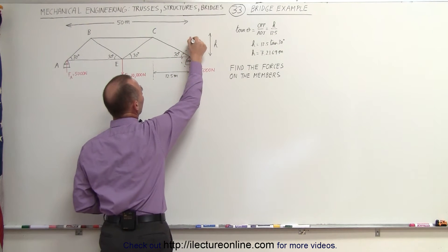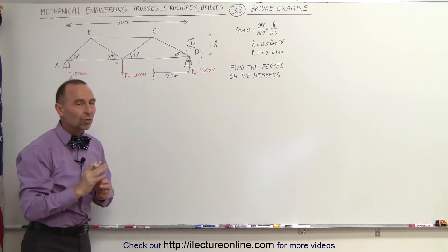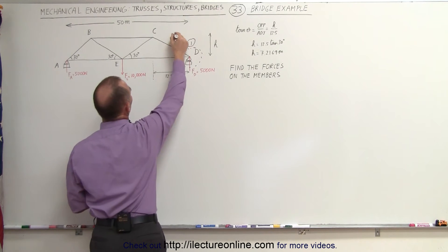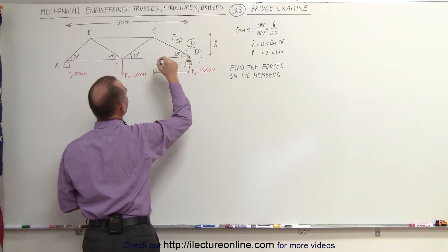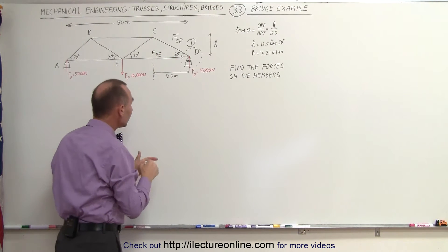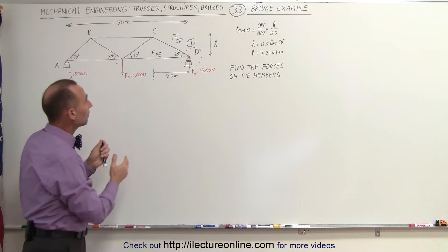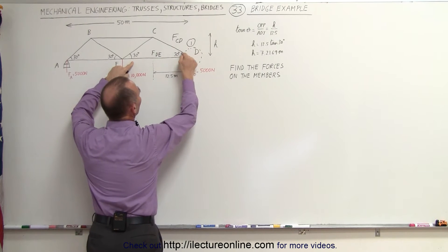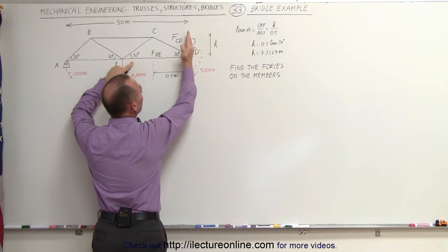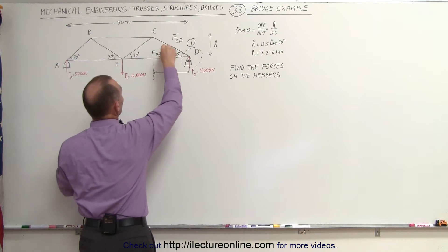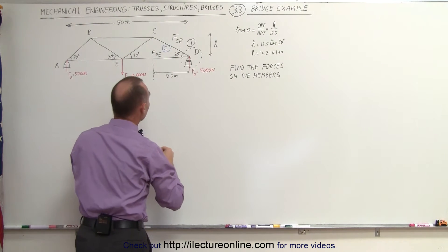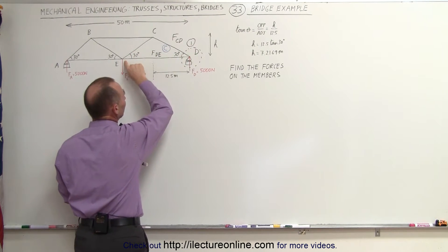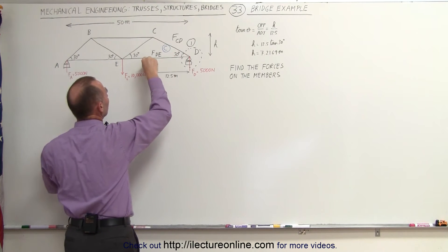First, let's look at joint number one and add the three forces acting on it: the support force, force FCD, and force FDE. We can determine if these are compression or tension. If this member were not connected and the force acted straight up, this beam would try to rotate, but can't — so it becomes compression. The other beam, if not attached, would pull free, meaning it is under tension.